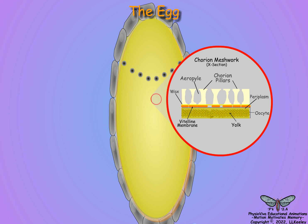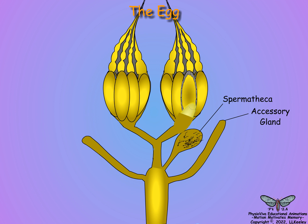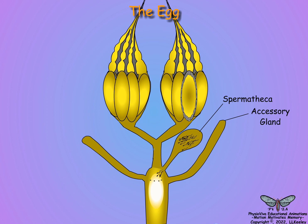Once the chorion is complete, the egg is released from the follicle into the lateral oviduct and passed to the common oviduct for fertilization and oviposition. As the egg enters the common oviduct, it is still deployed with meiosis arrested at metaphase. During passage through the common oviduct, sperm are released from the spermatheca, access the oocyte through the micropyles, and penetrate the oocyte, which stimulates the completion of meiosis. The fertilized egg is then ready for oviposition.